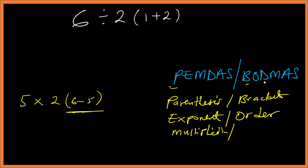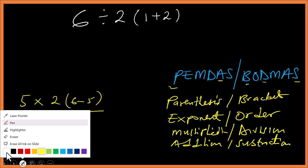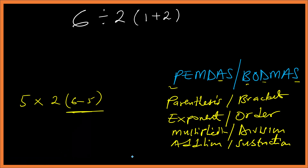After Multiplication comes Division, then Addition, and finally Subtraction. Now let's note that if two operations have the same precedence, we work from left to right.